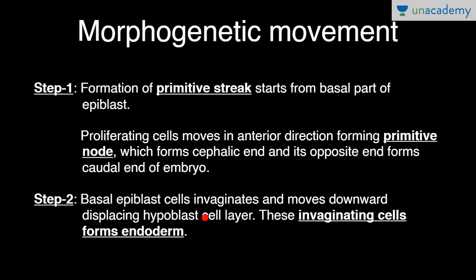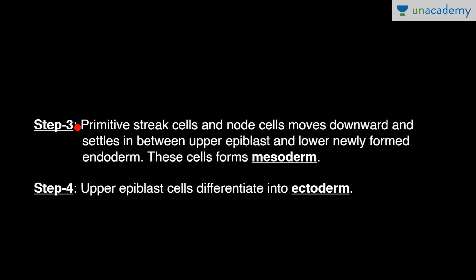Step 2: Basal epiblast cells invaginate and move downwards, displacing the hypoblast cell layer. The epiblast basal cells form the primitive streak, then the cells invaginate, move downwards, and displace the hypoblast. These invaginating cells form the endoderm. Step 3: Primitive streak cells and node cells move downward and settle in between the upper epiblast and the newly formed lower endoderm. These cells form the mesoderm.